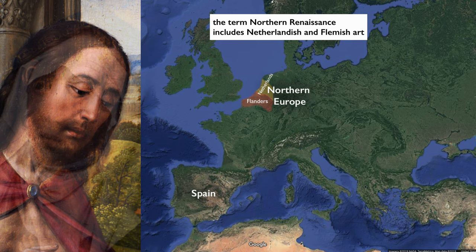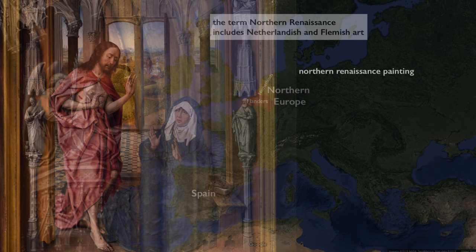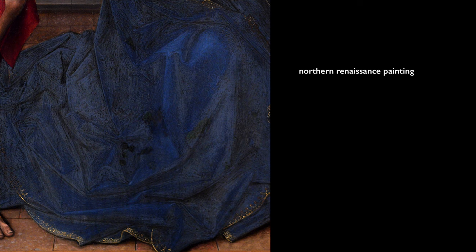Sometimes we use the word Flemish, sometimes Netherlandish, sometimes we call this the Northern Renaissance — art historians like to complicate things. But we're in Northern Europe, which was an important trading center in the 15th century, and some of the characteristics we associate with Northern Renaissance painting include things like the crumpled drapery.